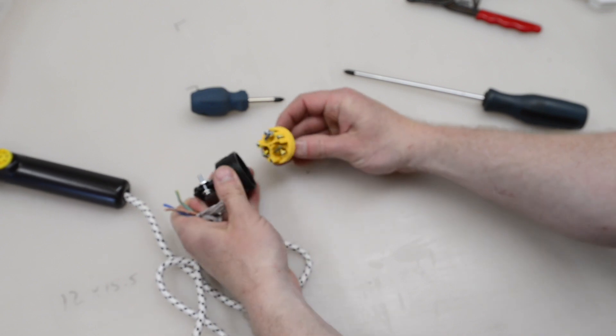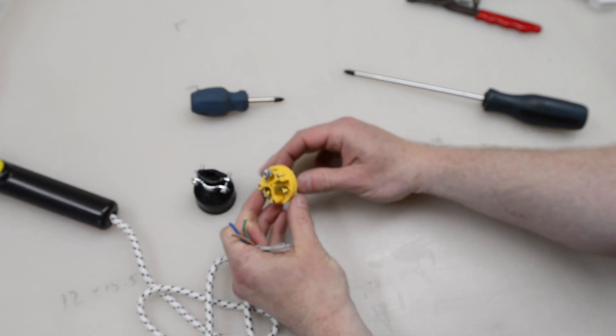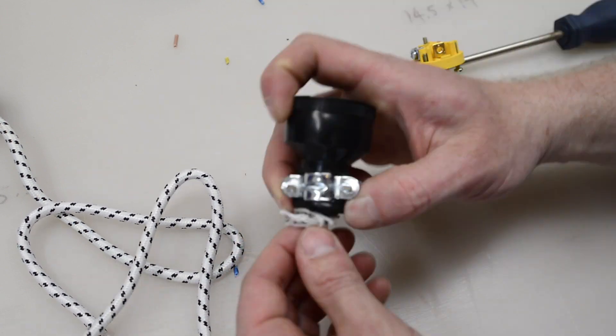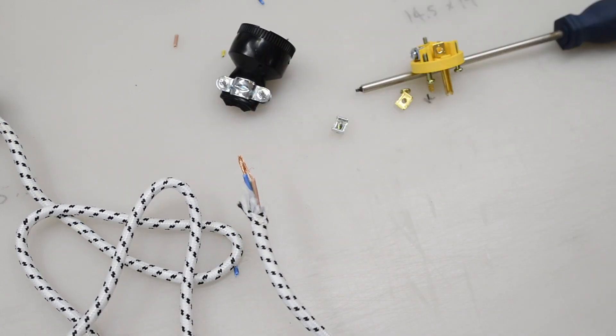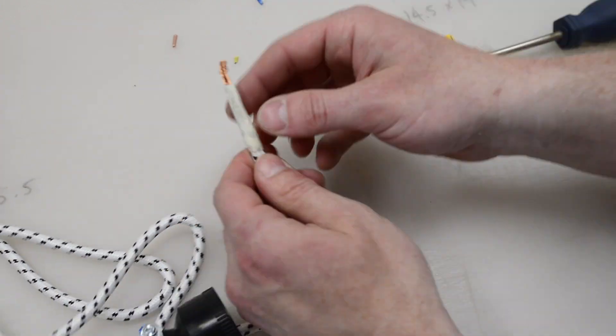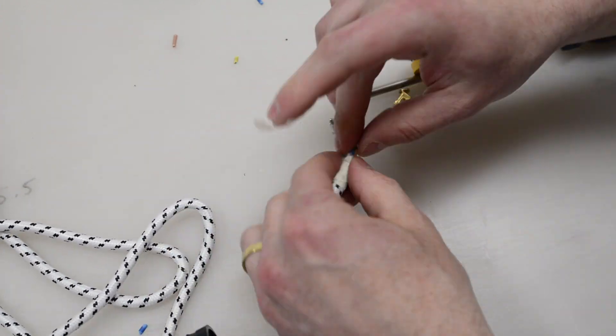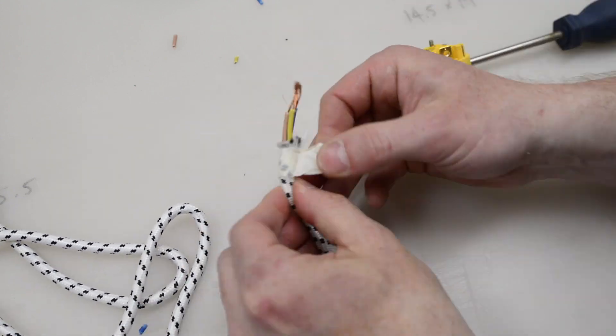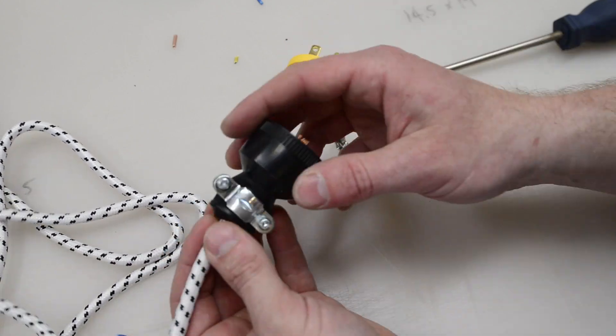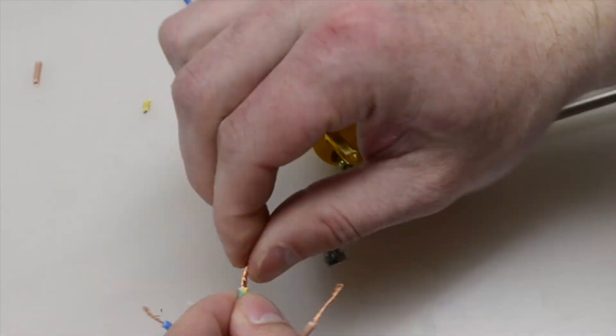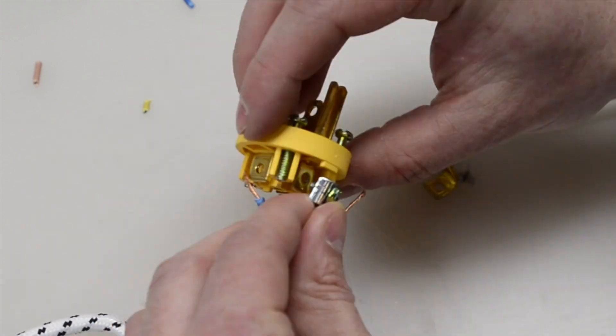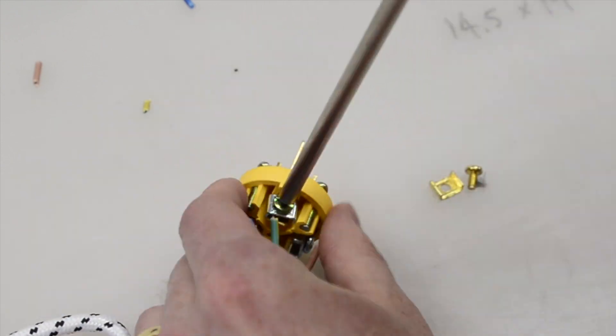Remove the housing from the new plug and slide it onto the cord. Then connect the wires to the plug by stripping the insulation from the ends and wrapping the exposed copper around the screws and tightening them down.